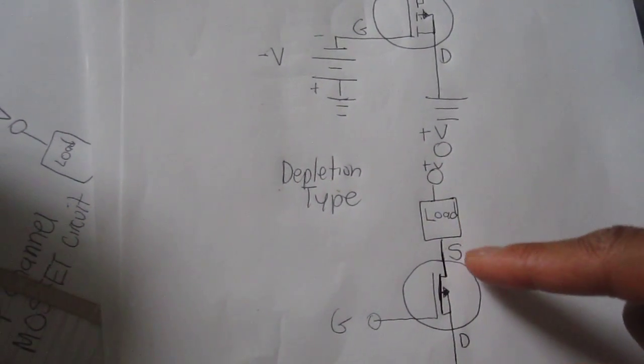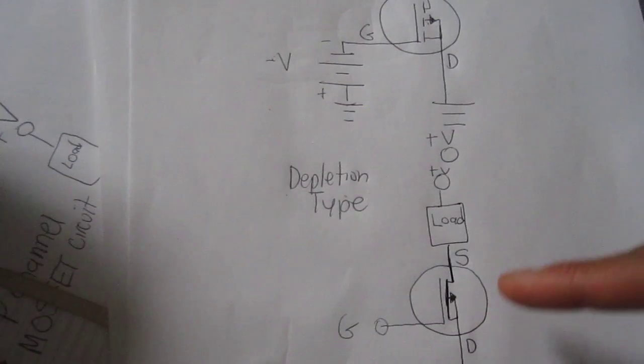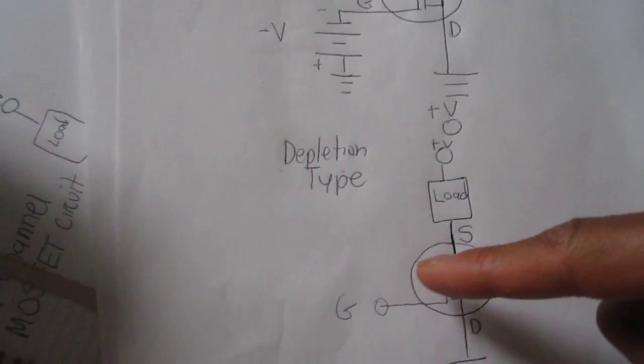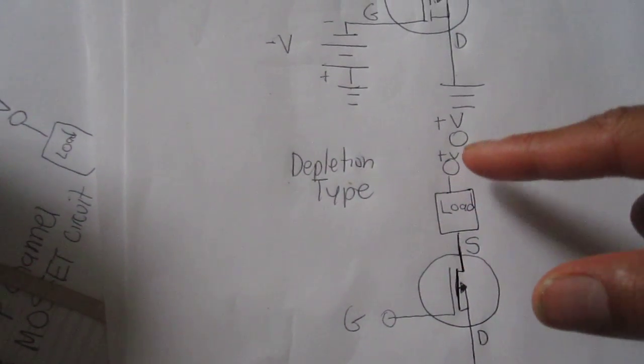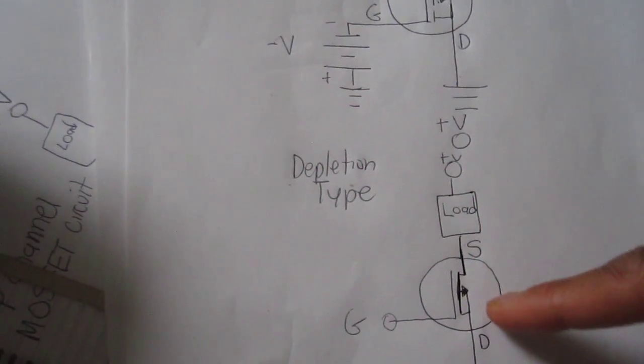it stops conducting if it reaches a certain threshold. As you apply more voltage to the gate terminal, it becomes less conductive until it shuts off.